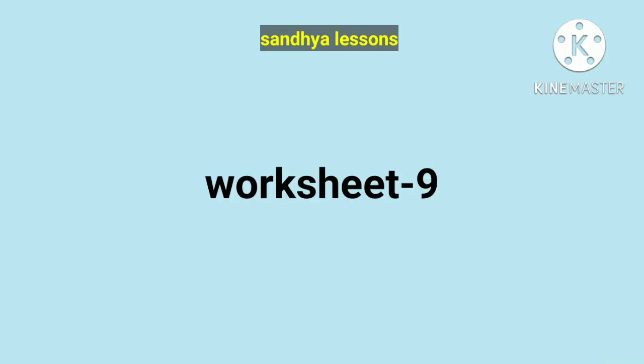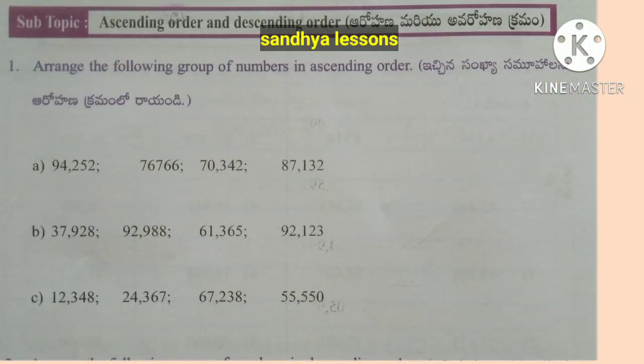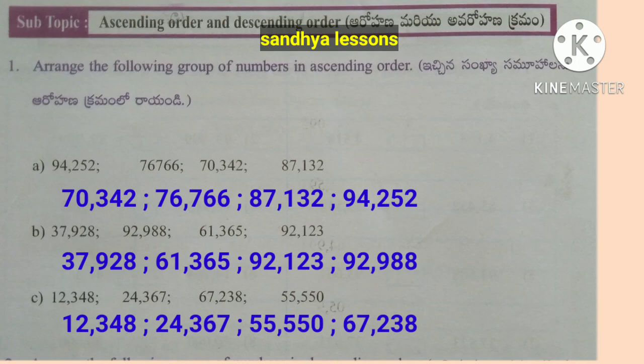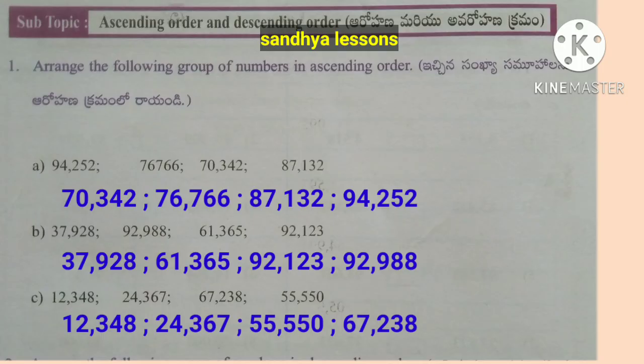Worksheet 9. First question: arrange the following groups of numbers in ascending order (from small to big). A: 70,342; 76,766; 87,132; 94,252. B: 37,928; 61,365; 92,123; 92,988. C: 12,348; 24,367; 55,550; 67,238.